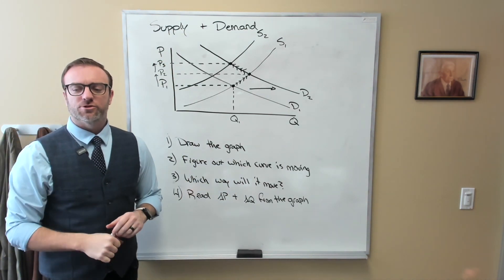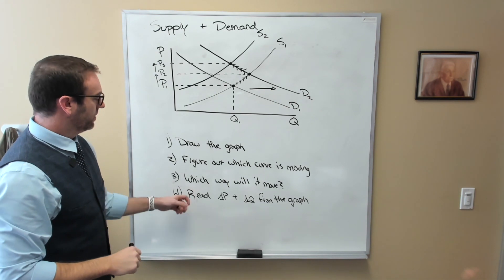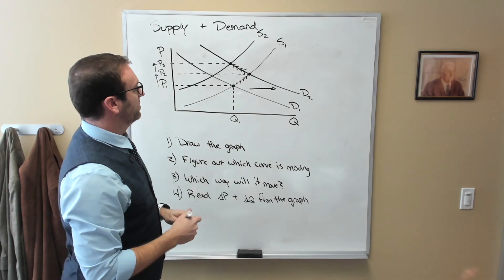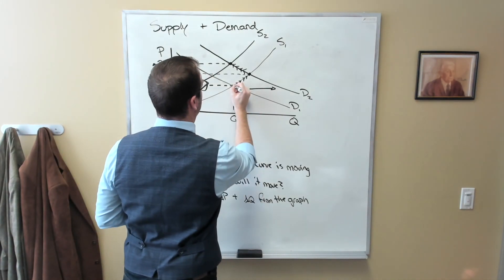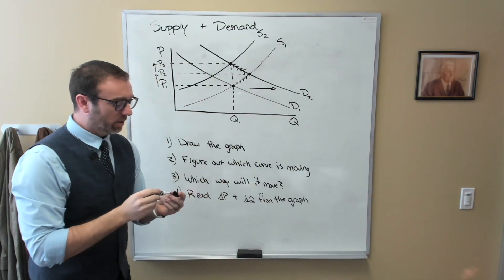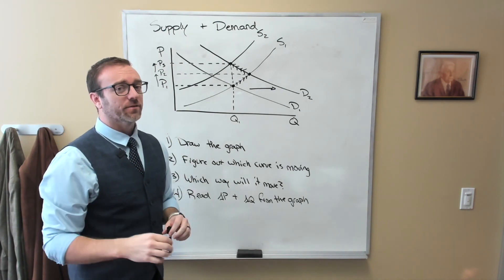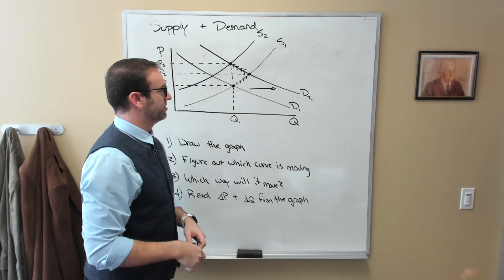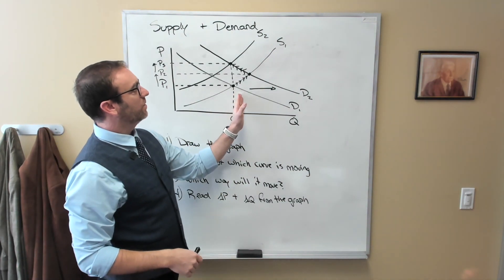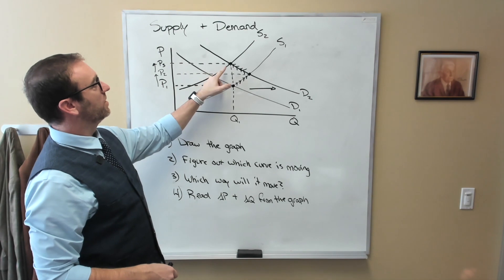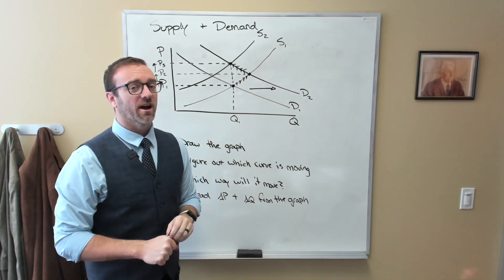But what about changes in quantity? Now I have deliberately drawn this example to show you that in this case, there is effectively no change in quantity whatsoever. However, we should be very careful in concluding that there is no change. Because it depends on how much the demand curve shifts out to the right, compared to how much the supply curve shifts to the left.